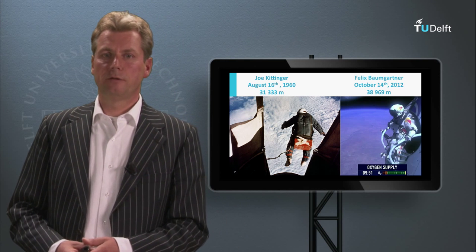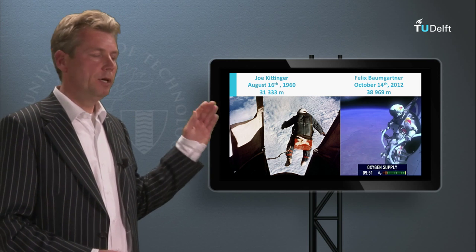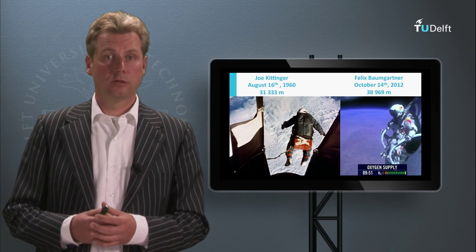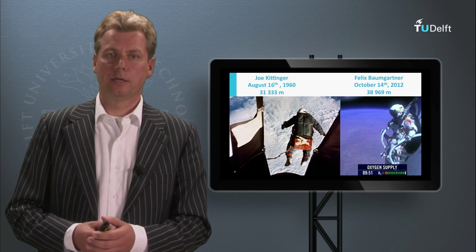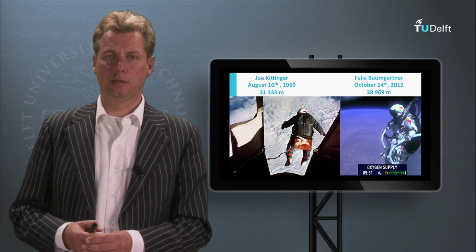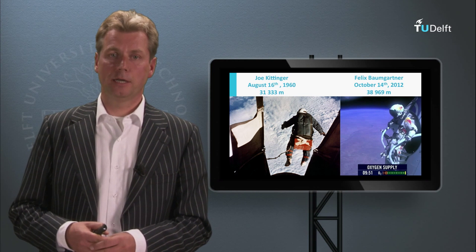Now let's use the results of the derivation to see if Joe Kittinger really was in space and what the circumstances were at this extreme altitude. For this we will make an example calculation that will show you how to use the different layers of the standard atmosphere.